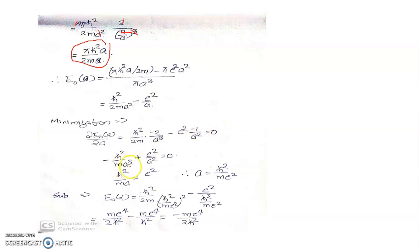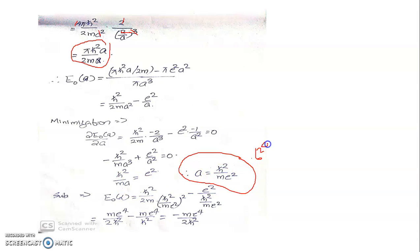Rearranging gives e² = h-bar²/(m a), so a = h-bar²/(m e²), which is nothing other than the Bohr radius, having a value equal to 0.529 Ångström once you substitute the values of h-bar, the mass of the electron, and the charge of the electron. It is quite astonishing to see that this adjustable parameter introduced in the variational method turns out to be exactly the Bohr radius.